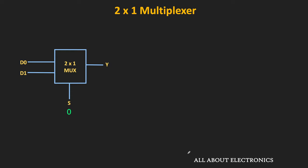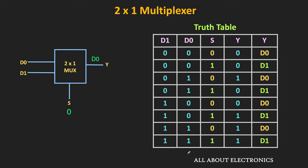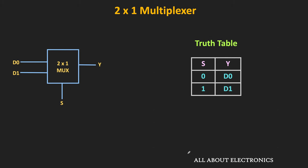Whenever S is equal to 0, the D0 input is connected to the output — so if D0 is 0, the output is 0, and if D0 is 1, the output is 1. When S is equal to 1, the D1 input gets connected to the output — if D1 is 1, the output is 1, and if D1 is 0, the output is 0. This is the overall truth table of the 2-to-1 multiplexer, covering all possibilities of D0, D1, and the selection line. The simplified truth table shows that when S is 0, the output is connected to D0, and when S is 1, the output is connected to D1.